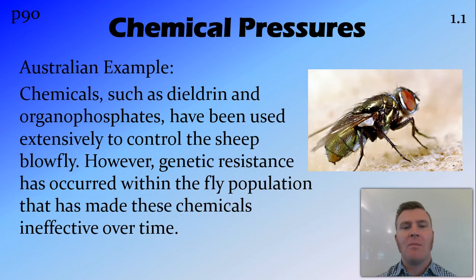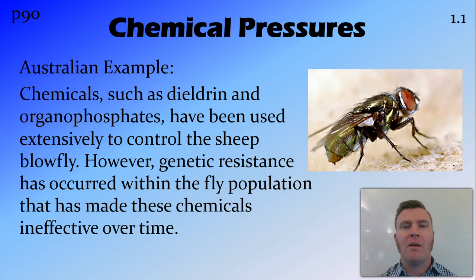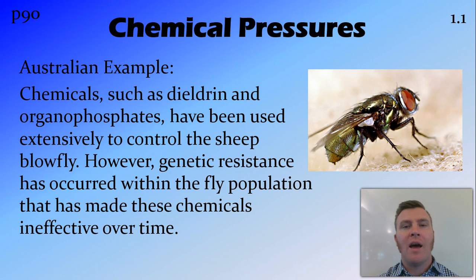An Australian example is the chemicals dieldrin and organophosphates, which have been used to treat the sheep blowfly. These were originally quite effective, but over many years of use and many successive generations, those flies which had an inherent genetic resistance — due to natural variation in the population — managed to live, while those susceptible to the chemicals died off. Those survivors passed that genetic resistance on to following generations. Now we have a situation where these chemicals, which used to be effective, are no longer effective, or if they are, we have to use them in much higher concentrations than before.